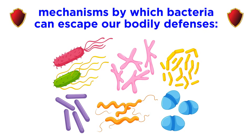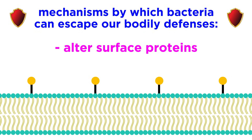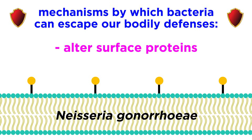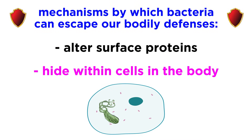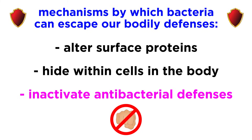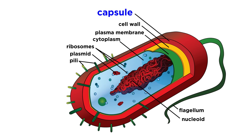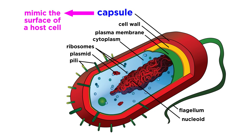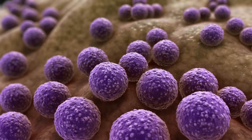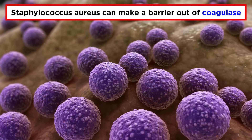Finally, bacteria have developed multiple mechanisms to escape our host defenses, especially in the case of long-term infections. They might alter their surface proteins to evade detection, like Neisseria gonorrhoeae, physically hide within cells in the body, or inactivate our standard antibacterial defenses. One of the most powerful virulence factors that some bacteria have are slime layers called capsules. These capsules can mimic the surface of a host cell, shielding the bacteria from typical immune responses. Other bacteria create makeshift shields within the site of infection, like Staphylococcus aureus, which forms a barrier using coagulase.